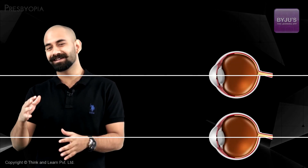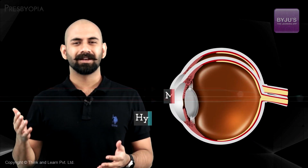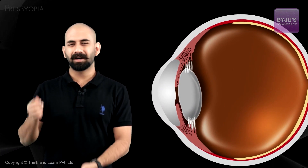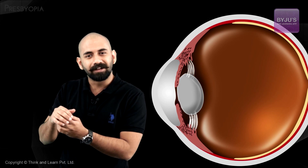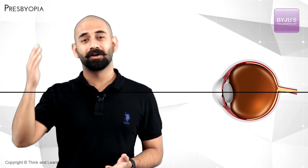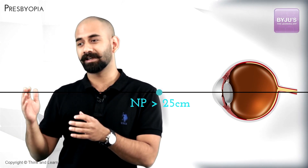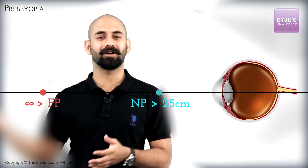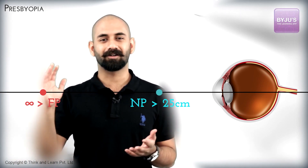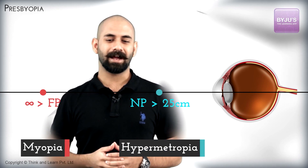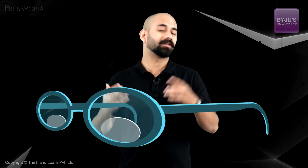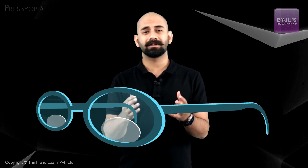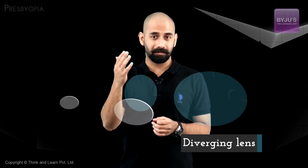The next defect is presbyopia, which is a combination of myopia and hypermetropia. It occurs because with old age the ciliary muscles become weak — they can't compress much nor expand fully. As a result, the near point increases beyond 25 centimeters and the far point is no longer at infinity. It's corrected using both a diverging and a converging lens. Bifocal lenses were previously used: a diverging lens on top to correct myopia and a converging lens at the bottom to correct hypermetropia.